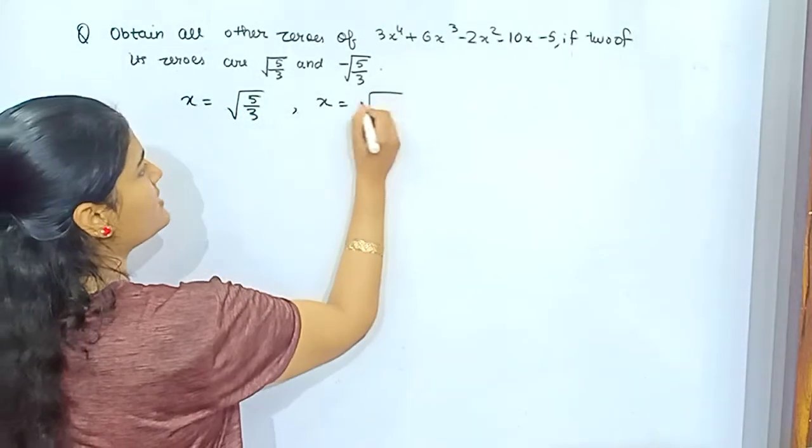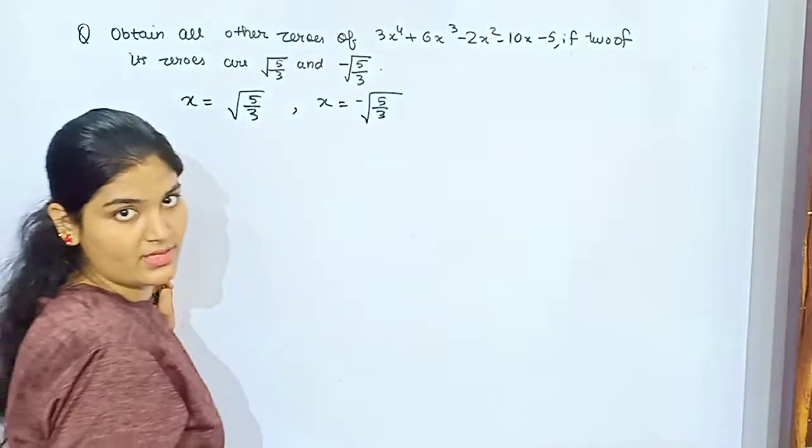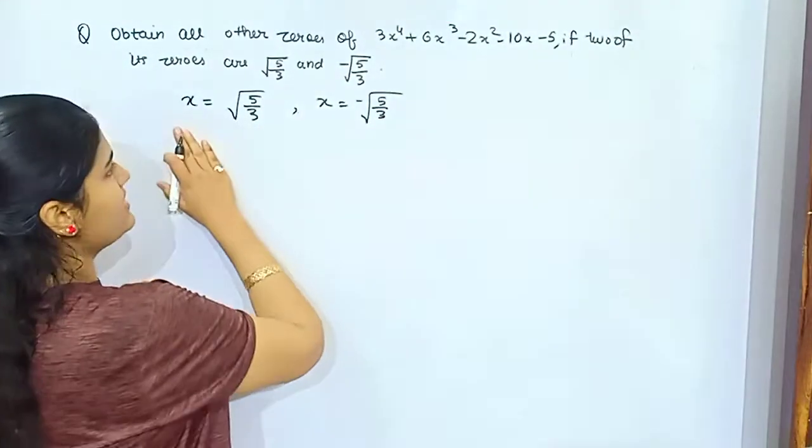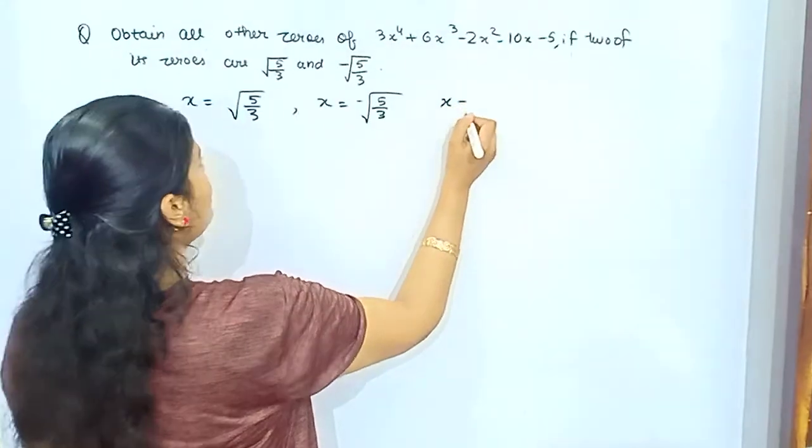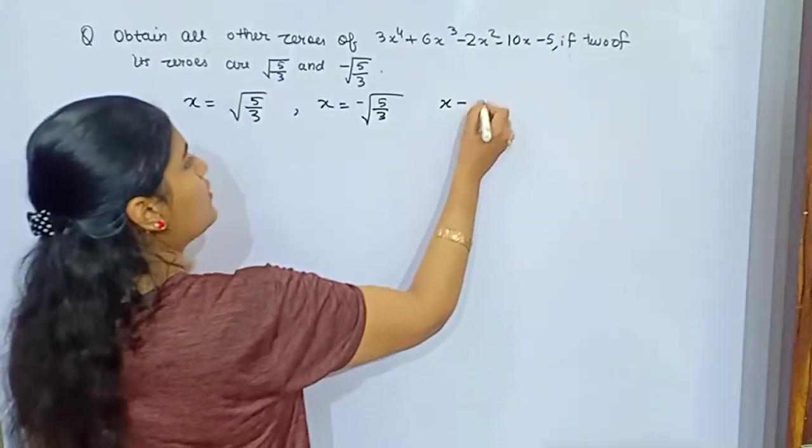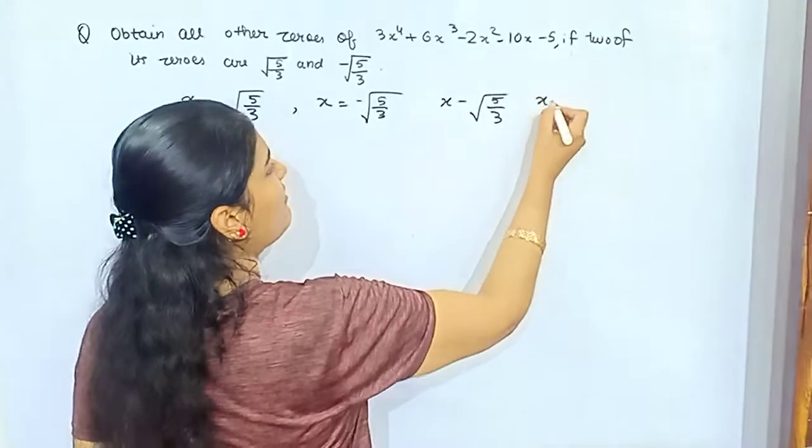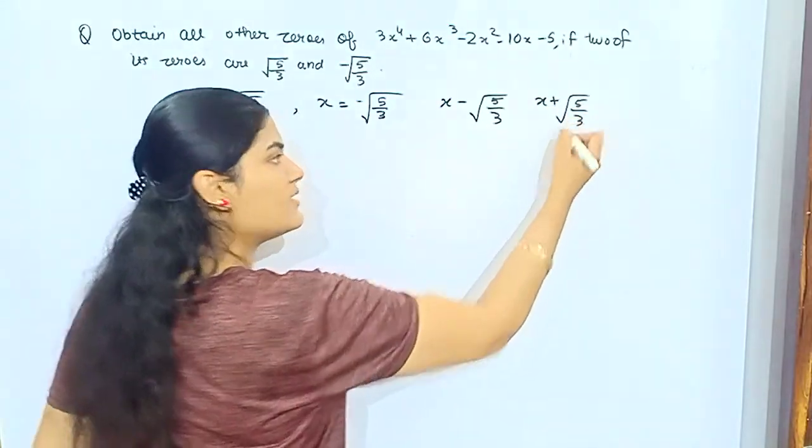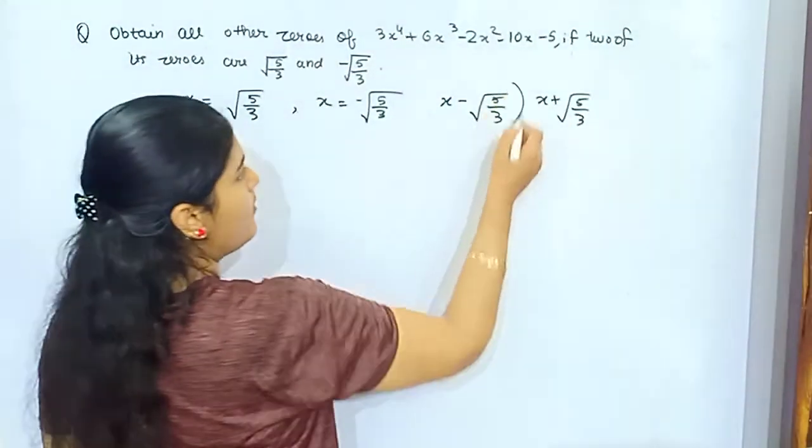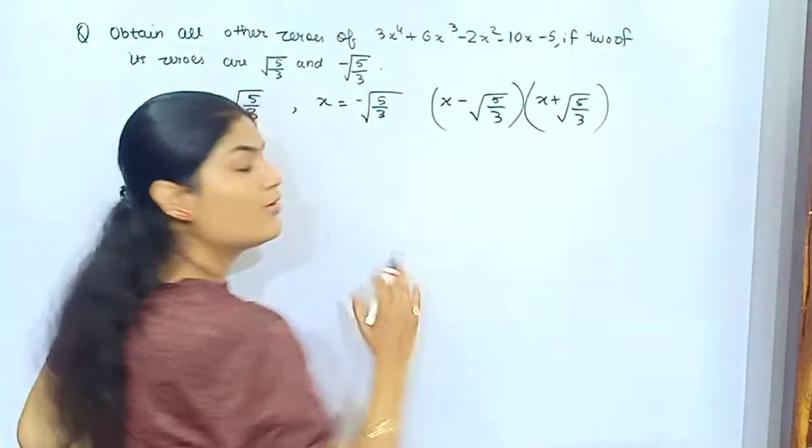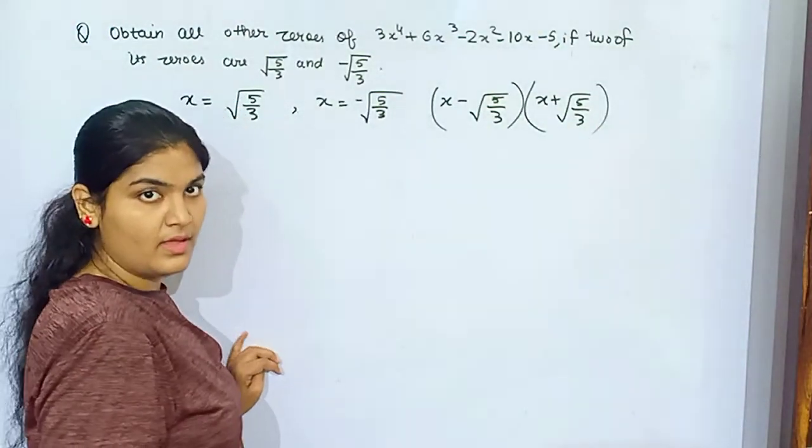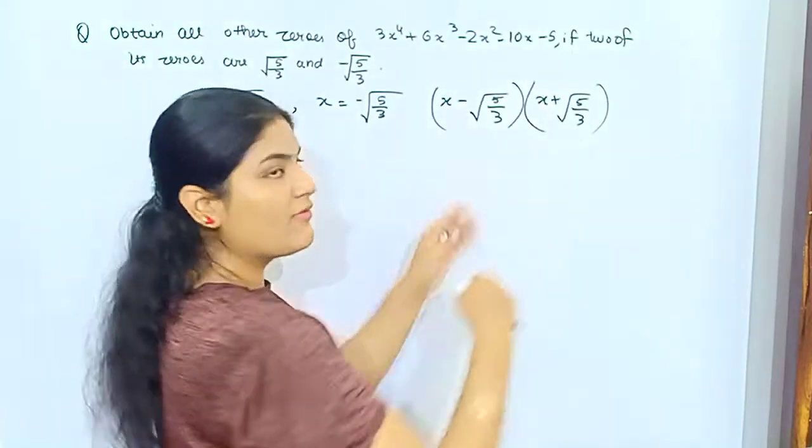That means it will create a scenario like (x - √5/3) and (x + √5/3) are your factors, right? That means if you multiply these two, it will also make a factor because these two you have got from a quadratic equation.